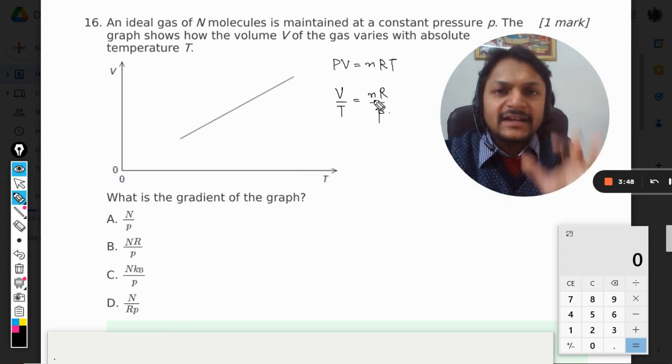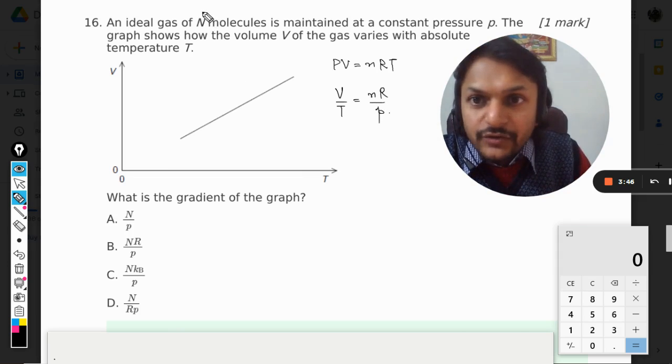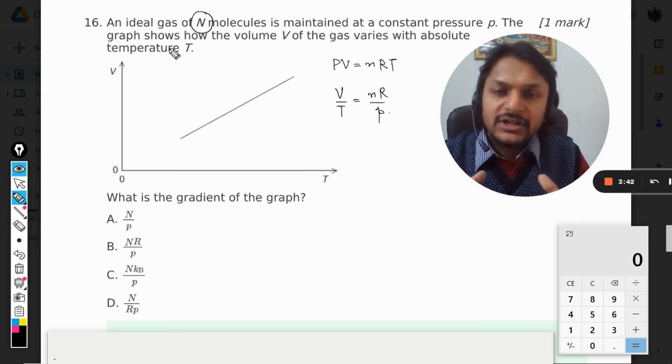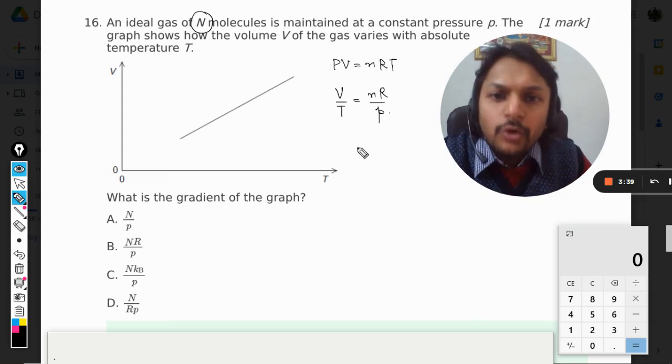Now n is number of moles, but that n is not given to us. Instead, we know the number of molecules that are contained in the chamber, and from that we can find number of moles.